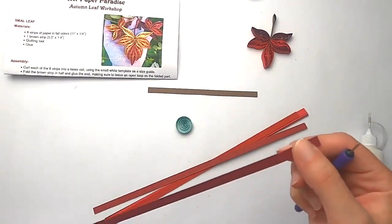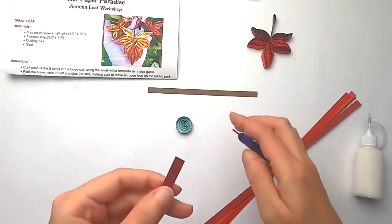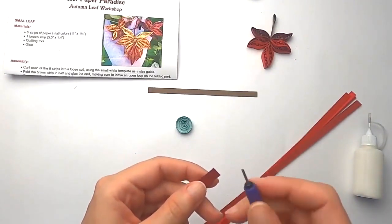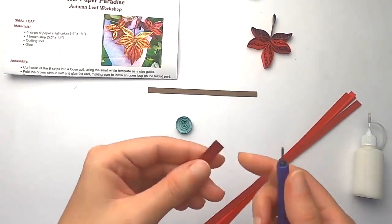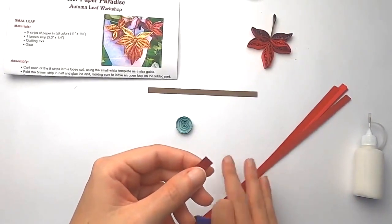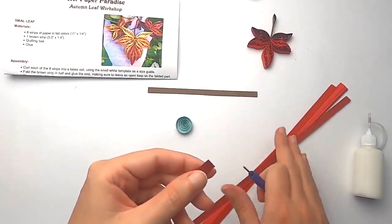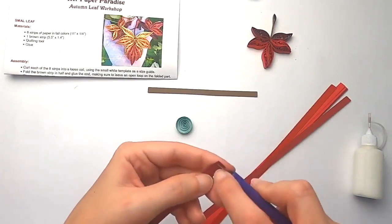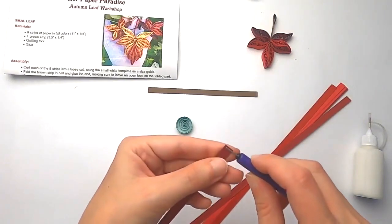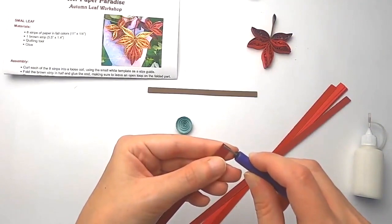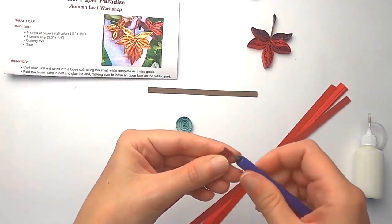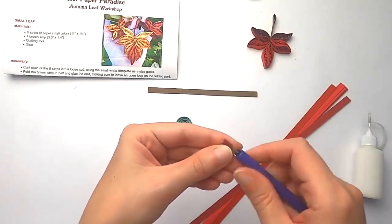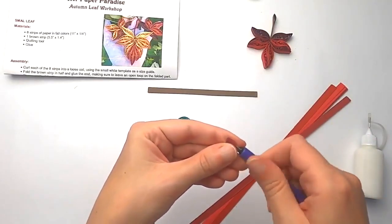And we're going to use this little guy as a template for the size we want them in. To create a loose coil, the quilling tool has a slot in it. So we are going to grab one strip. It doesn't matter what color it is because they're all going to be shaped the same way. So just grab one strip, slide the strip into the slot on the tool, and then you're going to start curling. You can curl it away from you, which is how I prefer it, but you can also curl it towards you if that's easy for you. It doesn't matter for the final result.